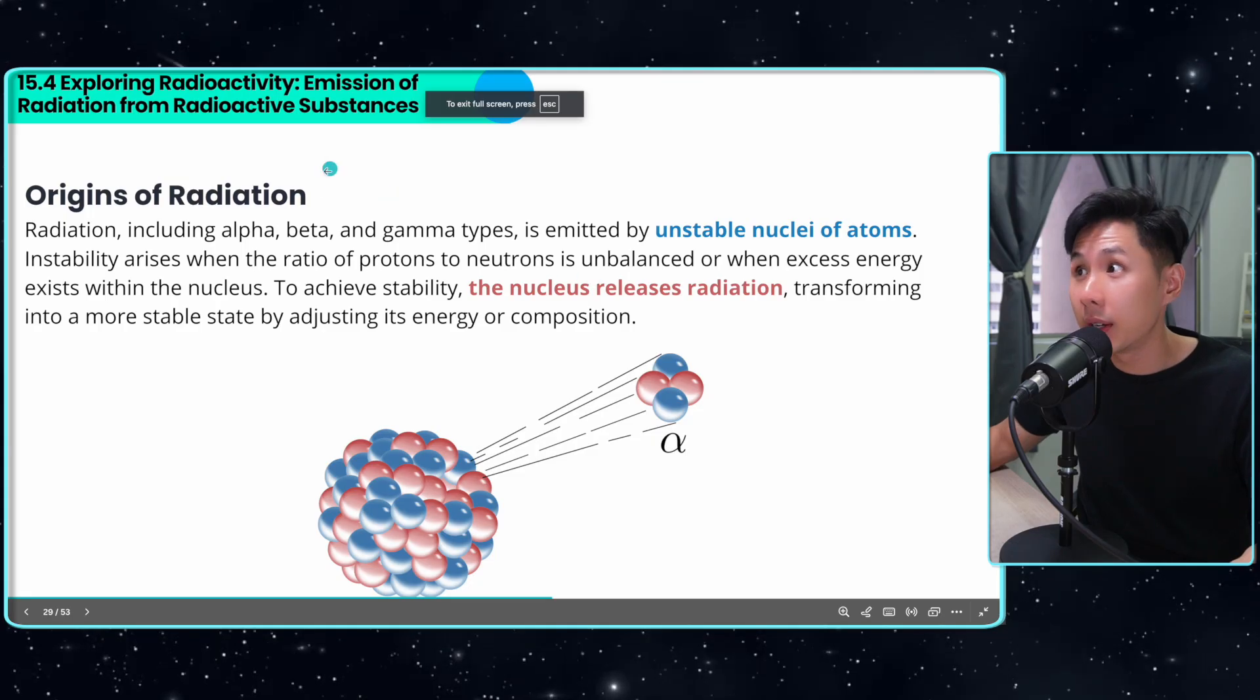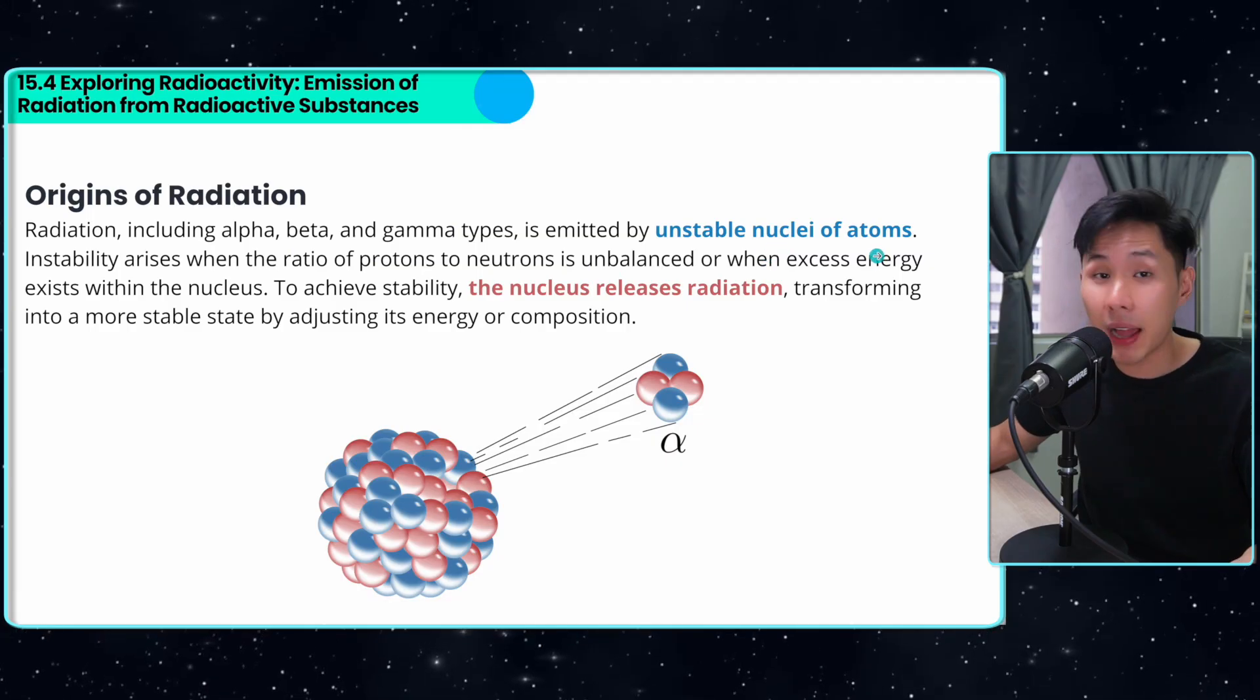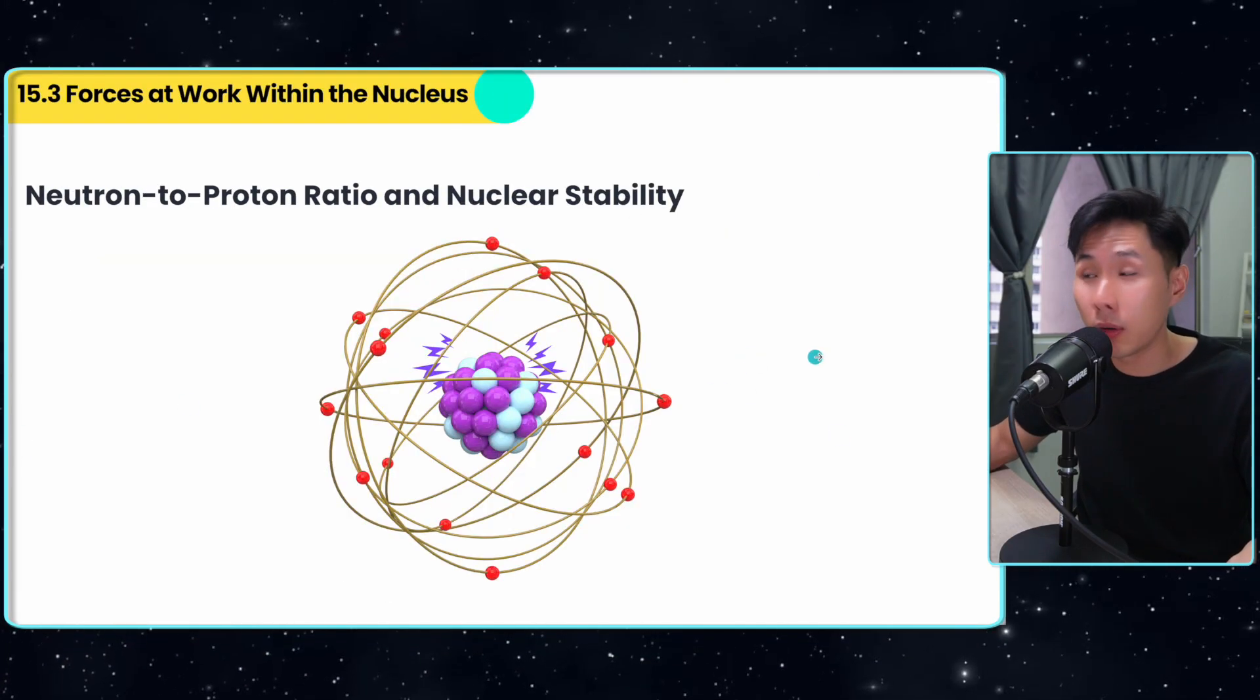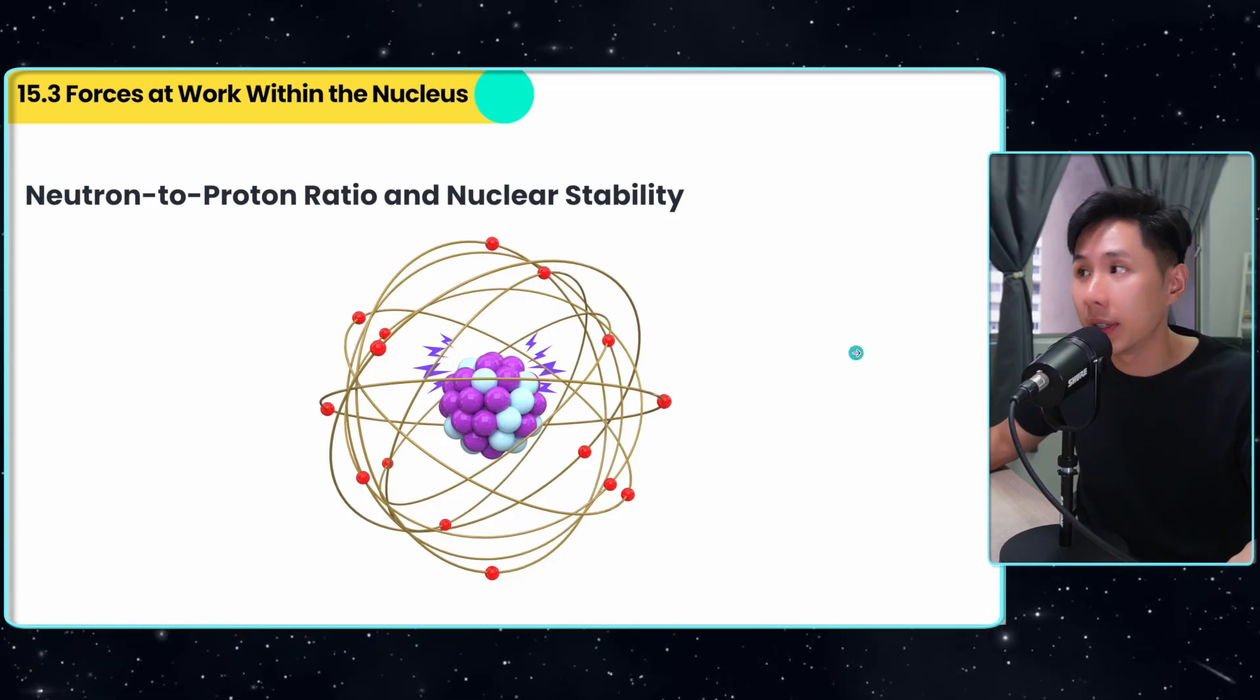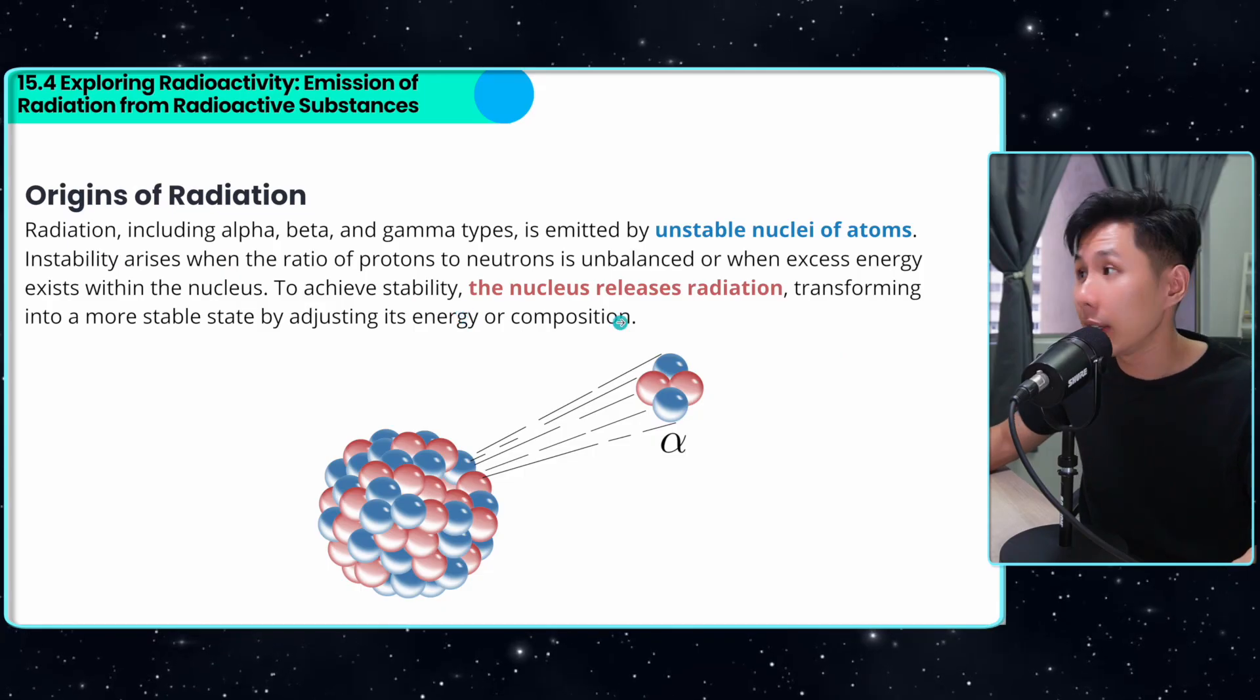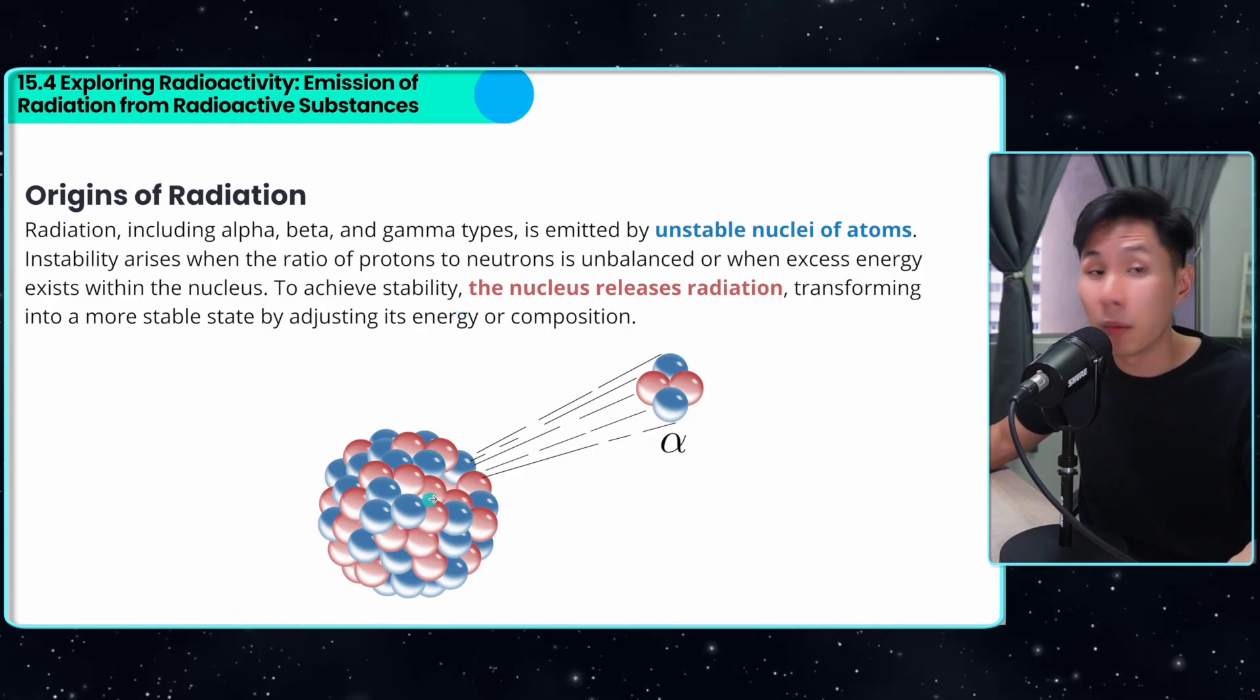In this video, we're going to learn about alpha, beta and gamma rays. They are emitted by unstable nuclei of atoms. We just learned when an atom will become unstable. The reason why we want to learn that is because it relates to radiation. To achieve stability, the nucleus will release radiation, transforming it into a more stable state.